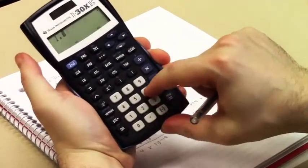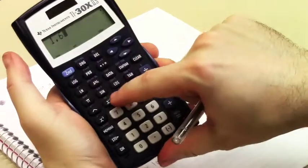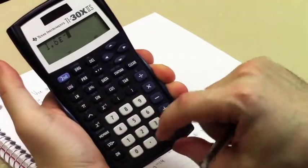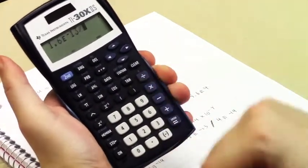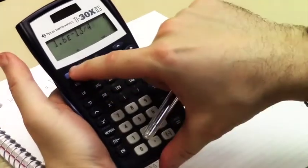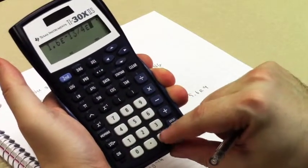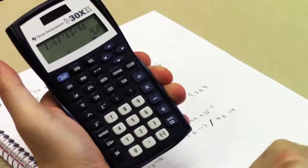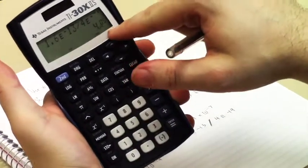what we're going to type in is 1.6E negative 13 divided by 4E negative 19. So, clear, 1.6 second EE negative 13 divided by 4 second EE negative 19. Then hit enter, and it gives you your answer right there.